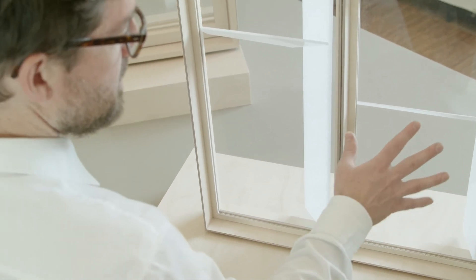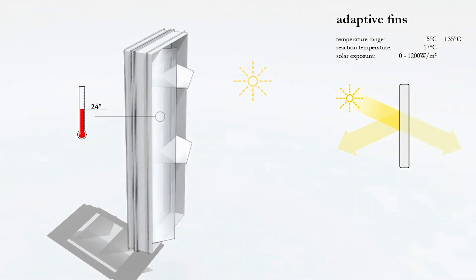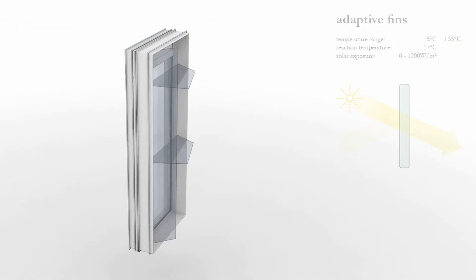This model shows a responsive shading device controlling direct solar radiation and allows natural diffuse light penetrating into the building.